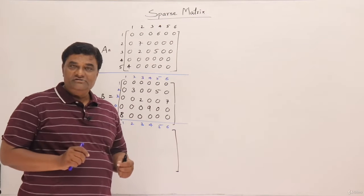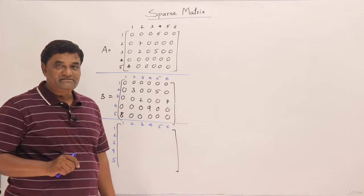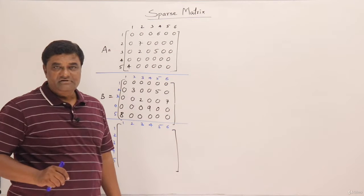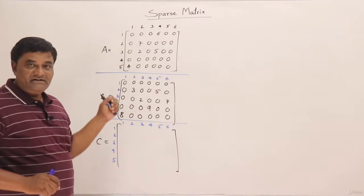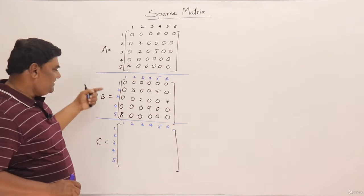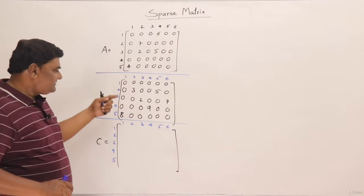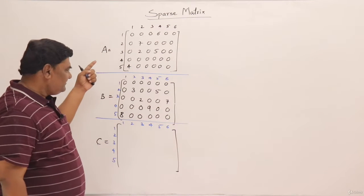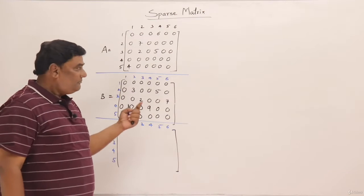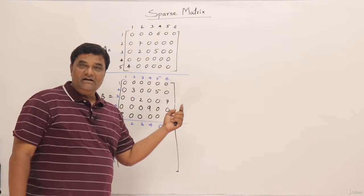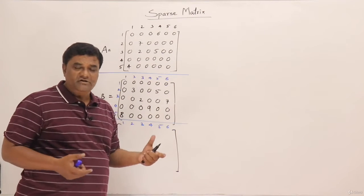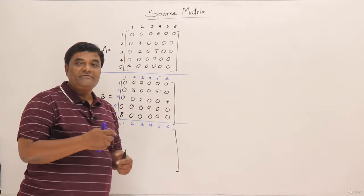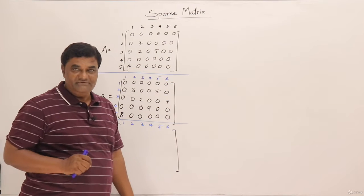Let us look at addition of two sparse matrices in coordinate list representation. Suppose I have sparse matrices A and B and I want to add these two and get the result in C. This is in mathematical form, but when it is represented in a program in the form of a coordinate list or 3-column method, we will see how we perform operations like addition.